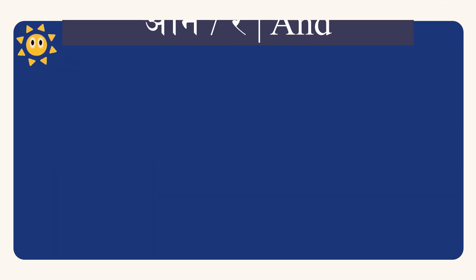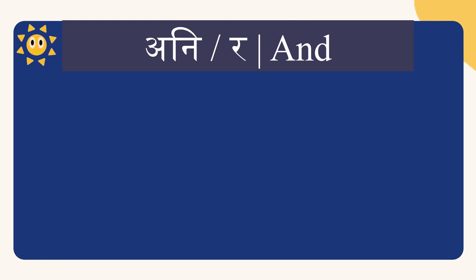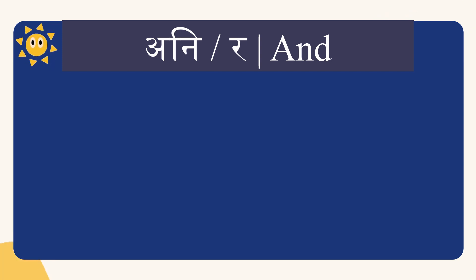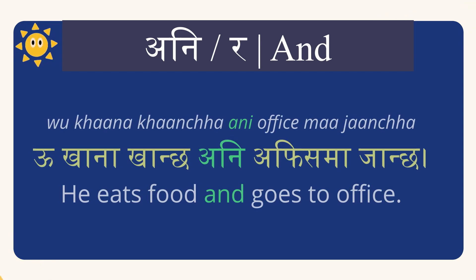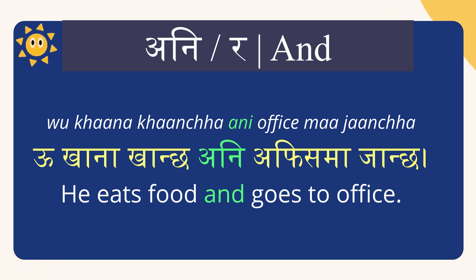Now let's do another conjunction, 'and'. For 'and' you can use ani or ra. U khana khancha ani office ma jancha — he eats food and goes to office.